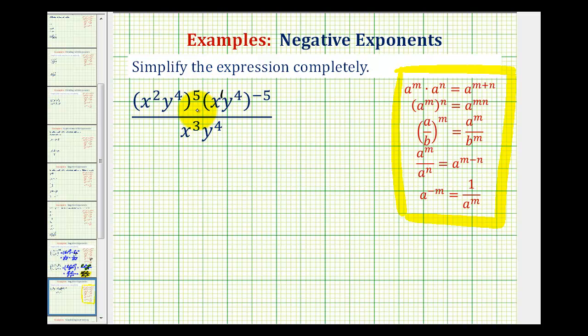So we'll start by applying the power property of exponents. If we have powers to powers, we multiply the exponents. So looking at the numerator, we'll multiply both exponents here by five.